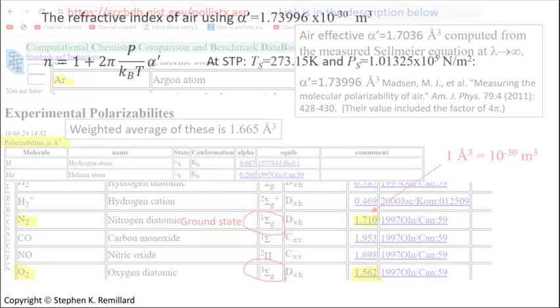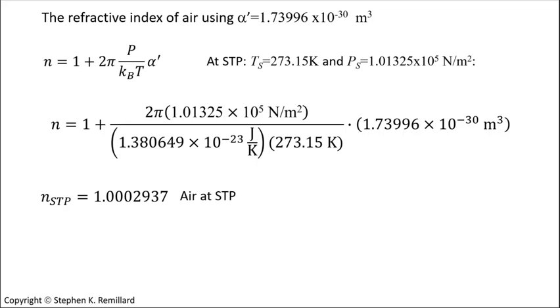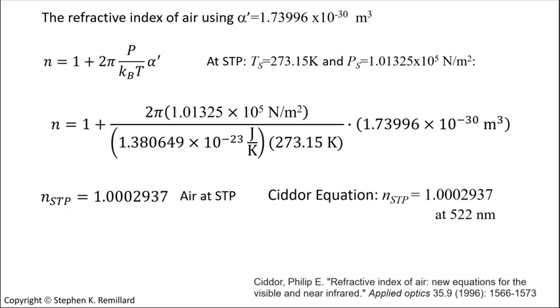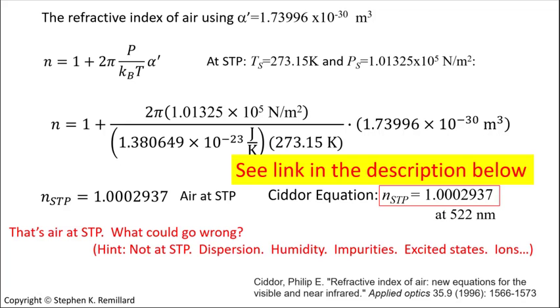So compute the refractive index using this polarizability. At STP, our working equation gives 1.0002937, which certainly compares well to the Sellmeier equation for air published by Ciddor, but only at 522 nanometers. And wavelength is important. Air has this refractive index, provided that it's at STP, at 522 nanometers, there's no water vapor, there's no CO2, it isn't ionized, and so on. Various conditions of air can be accounted for, and I do recommend Ciddor's paper to find out about this.